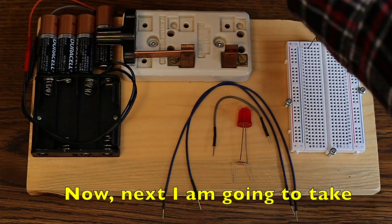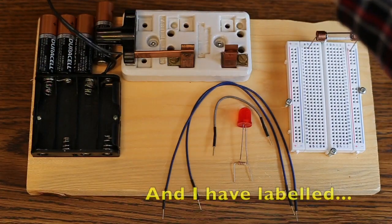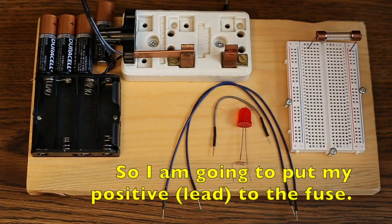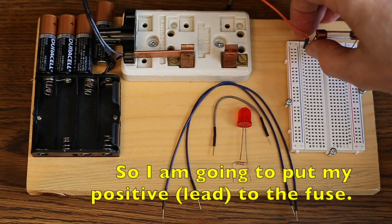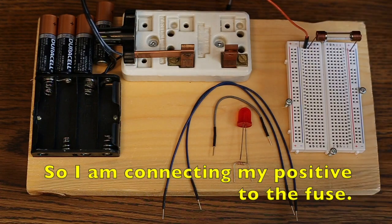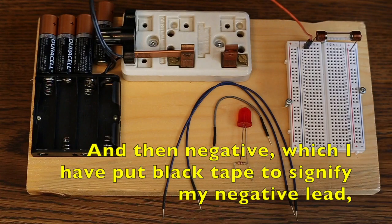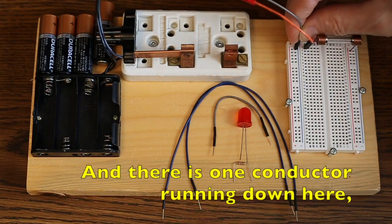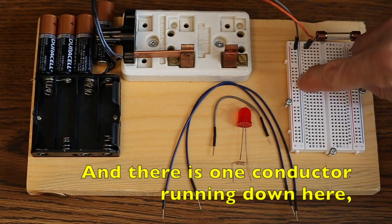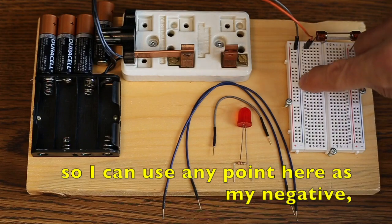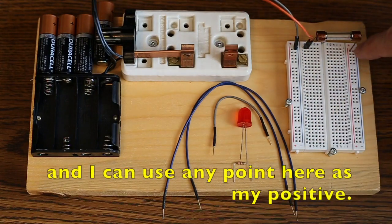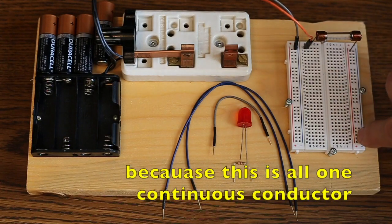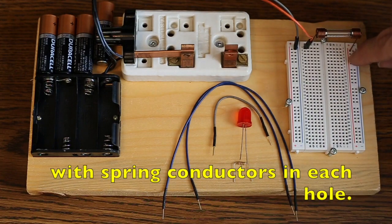Now next, I'm going to take the conductors from my battery holder, and I've labeled, I've put some red tape to show the positive, so I'm going to put my positive to the fuse, so I'm connecting my positive to the fuse. And then negative, which I put black tape to signify my negative lead, I'm putting on this negative terminal here. And there's conductors, one conductor running down here, so I can use any point here as my negative, and I can use any point here as my positive, because this is all one continuous conductor, with spring conductors in each hole.